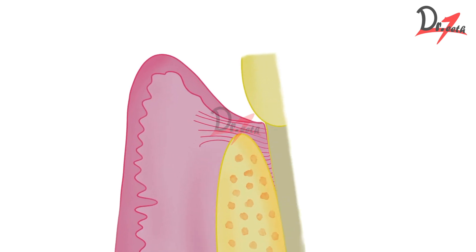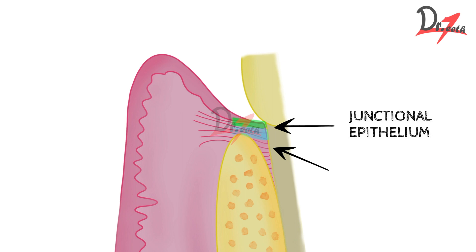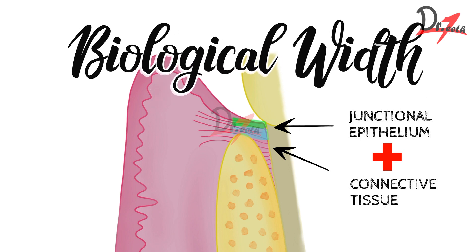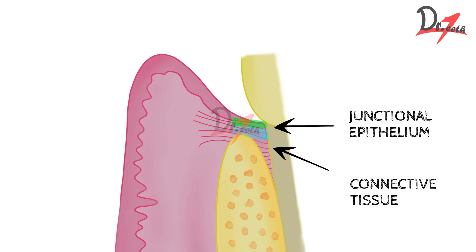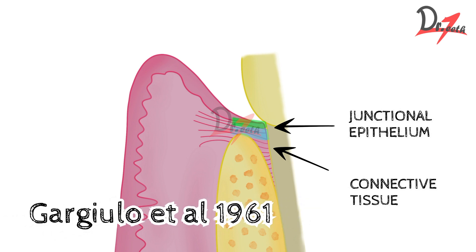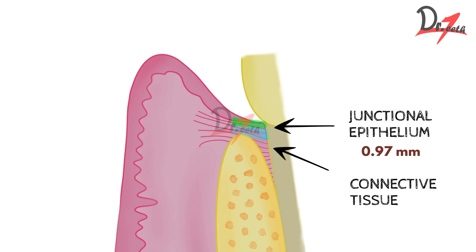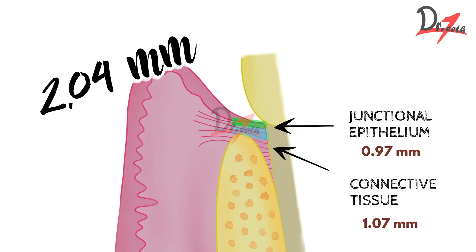The green area is the junctional epithelium and the blue one is the connective tissue attachment, and they each have a certain height. When you add these two heights together you get something called the biological width. The average height of the epithelial attachment is around 1 mm — 0.97 mm to be precise — but it is variable among patients. The average connective tissue height is also around 1 mm — 1.07 mm. So when you add these two you get around 2.04 mm, or on average 2 mm of biological width.